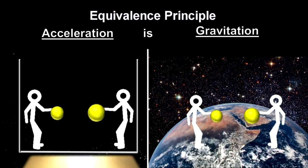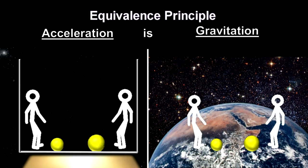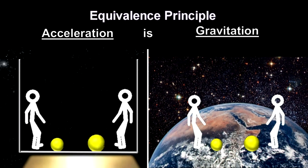His equivalence principle does just that. Acceleration and gravitation are the same. And therefore, the mass associated with acceleration and the mass associated with gravitation will naturally be the same.